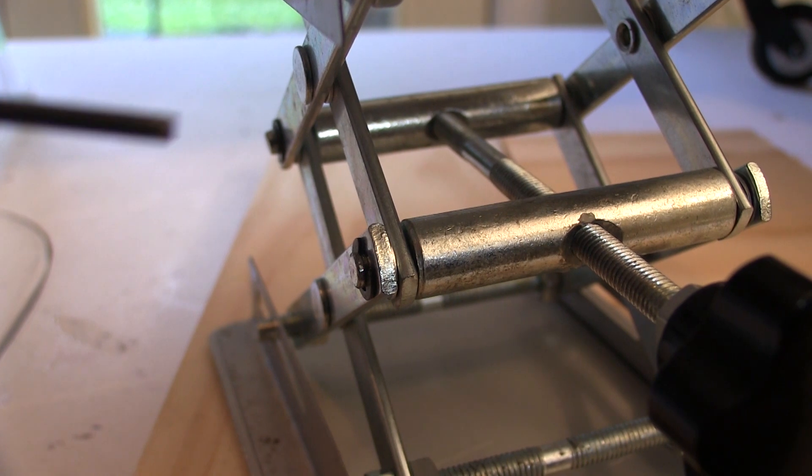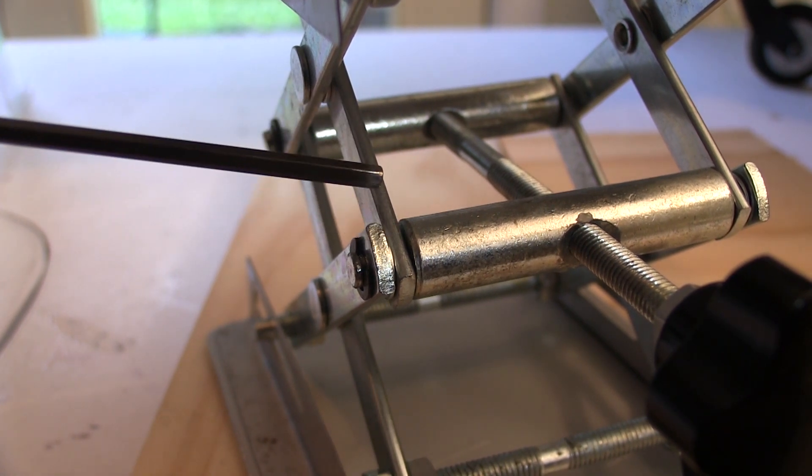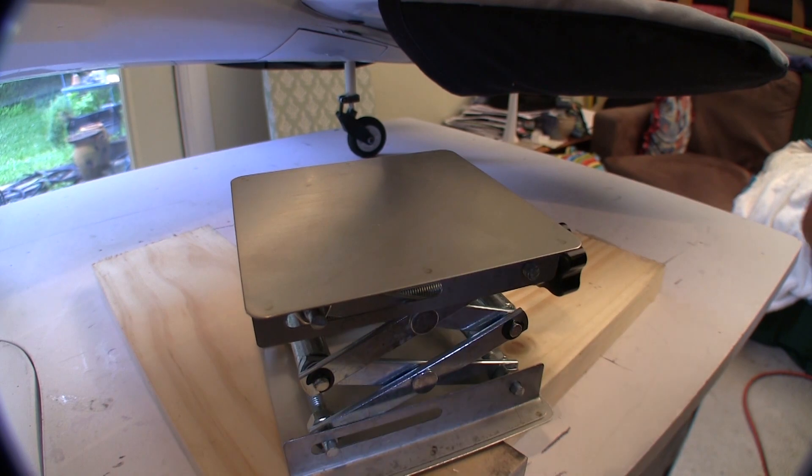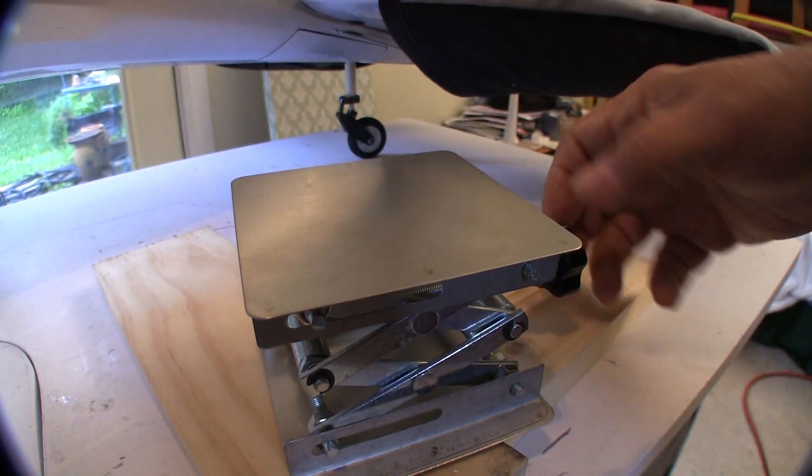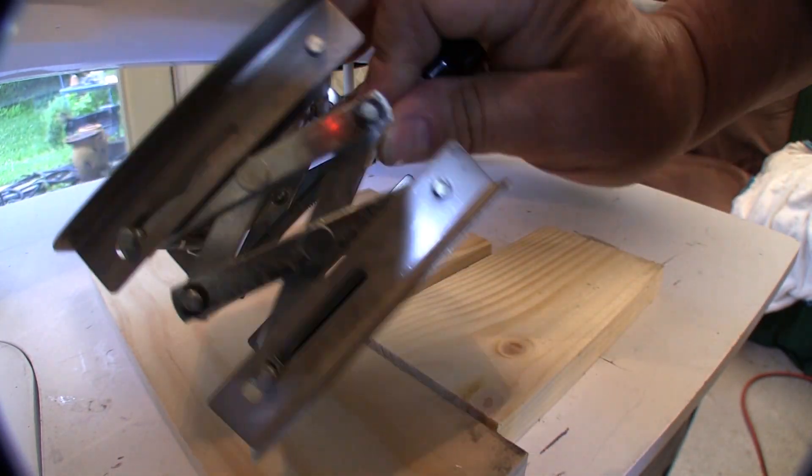the scissor mechanism look kind of big for the job, but that just means this is going to be very durable. The upper and lower surfaces of the stand are flat stainless steel. The bottom has four rubber feet that keep it from sliding around on the surface.